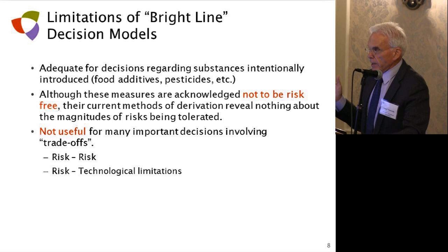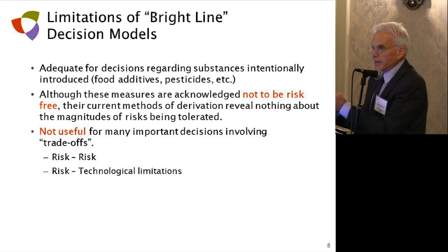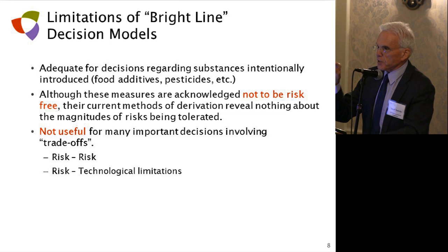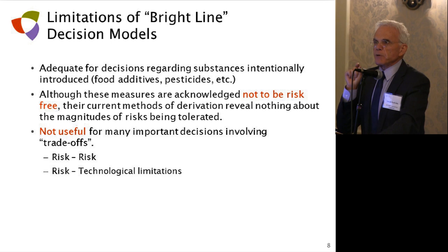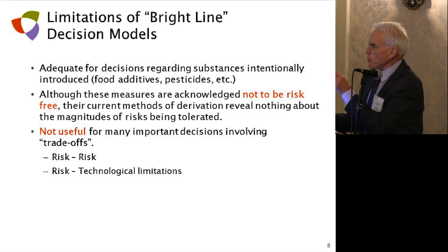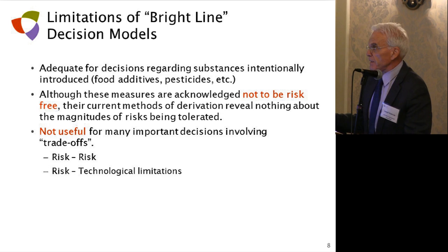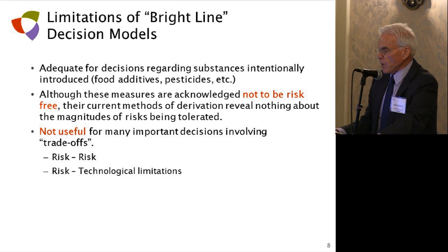Wherever there are trade-offs — I use the term risk-risk trade-off, where you face a decision that carries some risk of doing one thing and some risk of not doing it — bright line models are not useful for that purpose because they have no flexibility. It's like there's one definition of safe and only one. There are many decisions, particularly as we deal with food contaminants, where there are serious technological limitations to what we can do, and there's always going to be some risk trade-off with technological limitation.